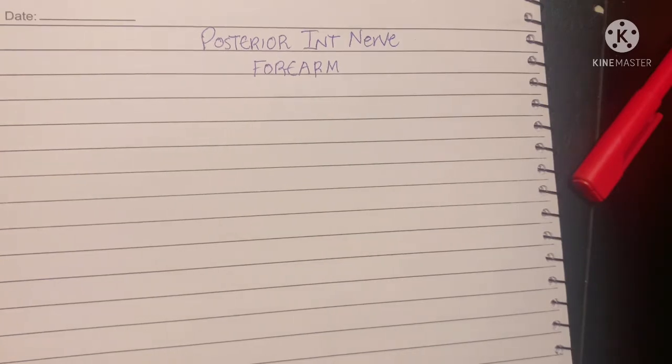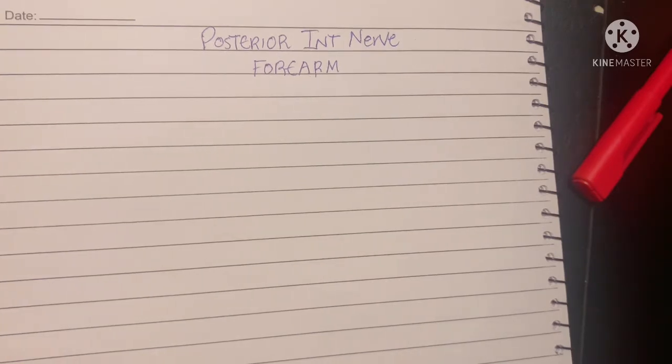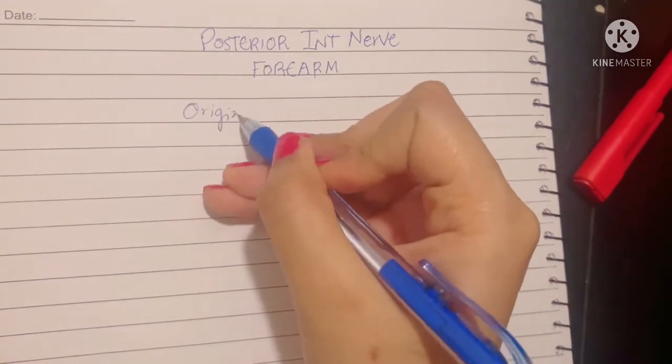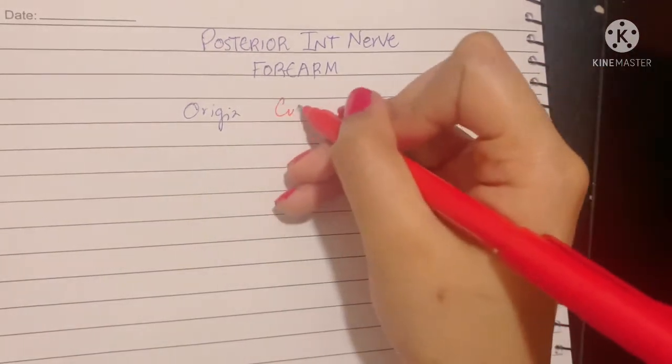The posterior interosseous nerve arises as the deep branch of the radial nerve, if you remember, in the cubital fossa. So the origin is in the cubital fossa.